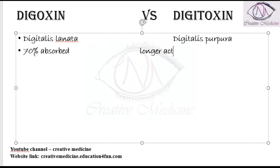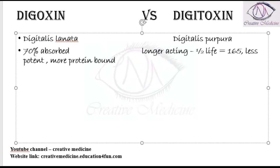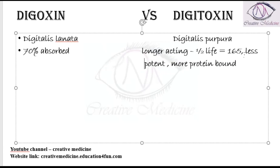Digitoxin is a longer-acting drug — the half-life of digitoxin is around 165 hours. It is less potent and it is more protein bound compared to digoxin.